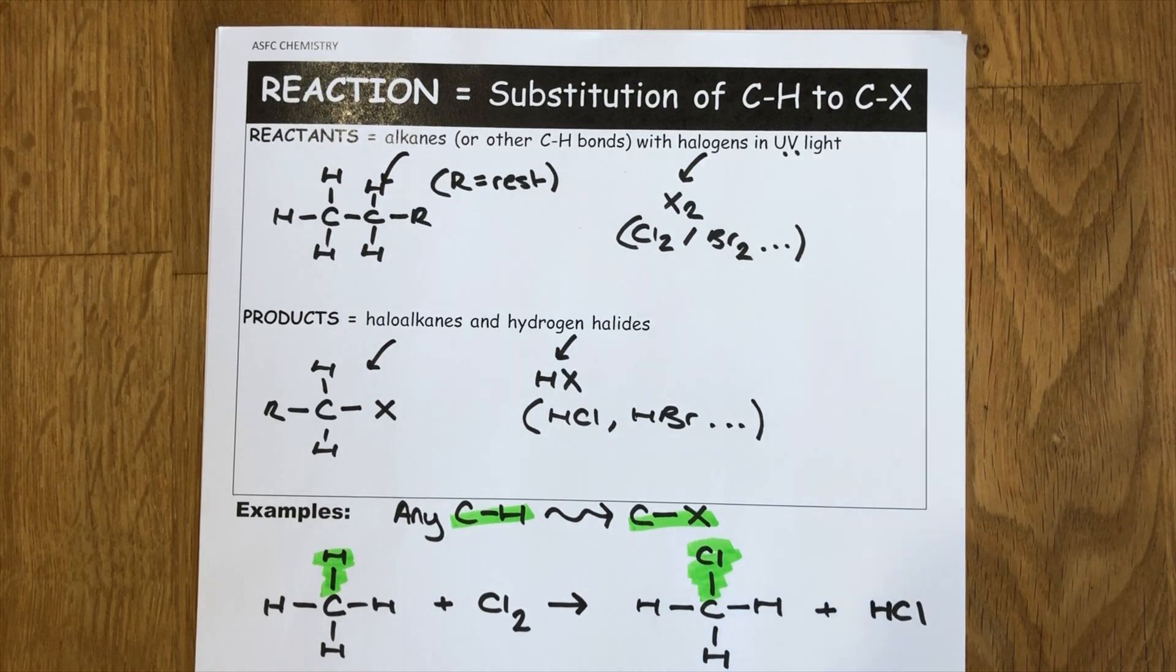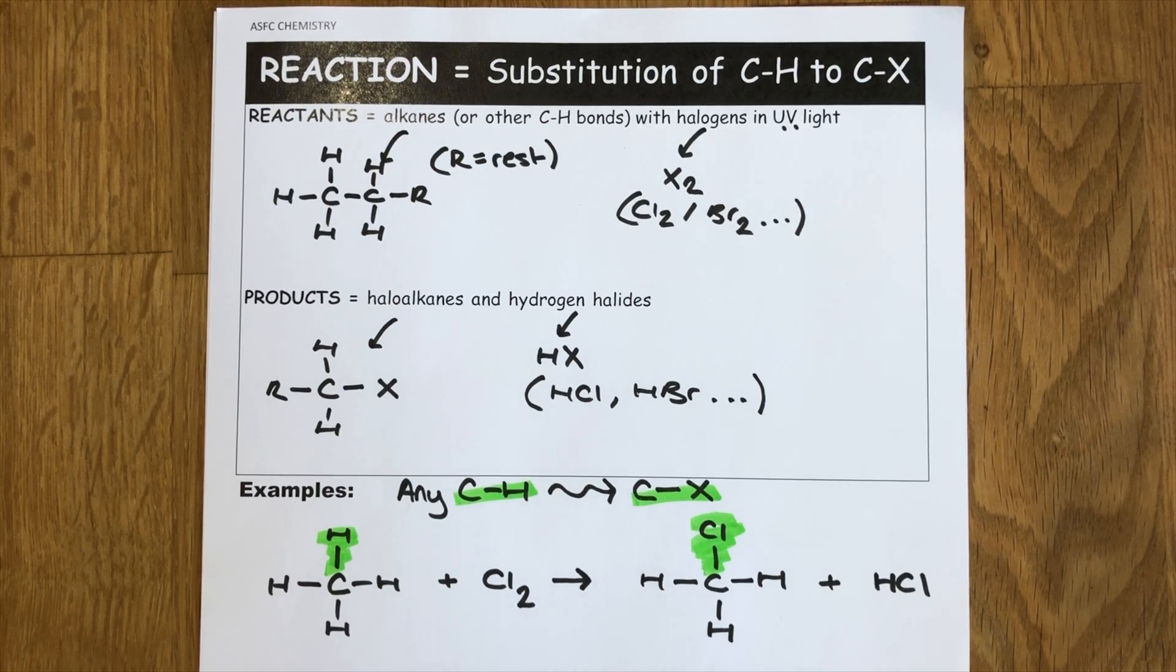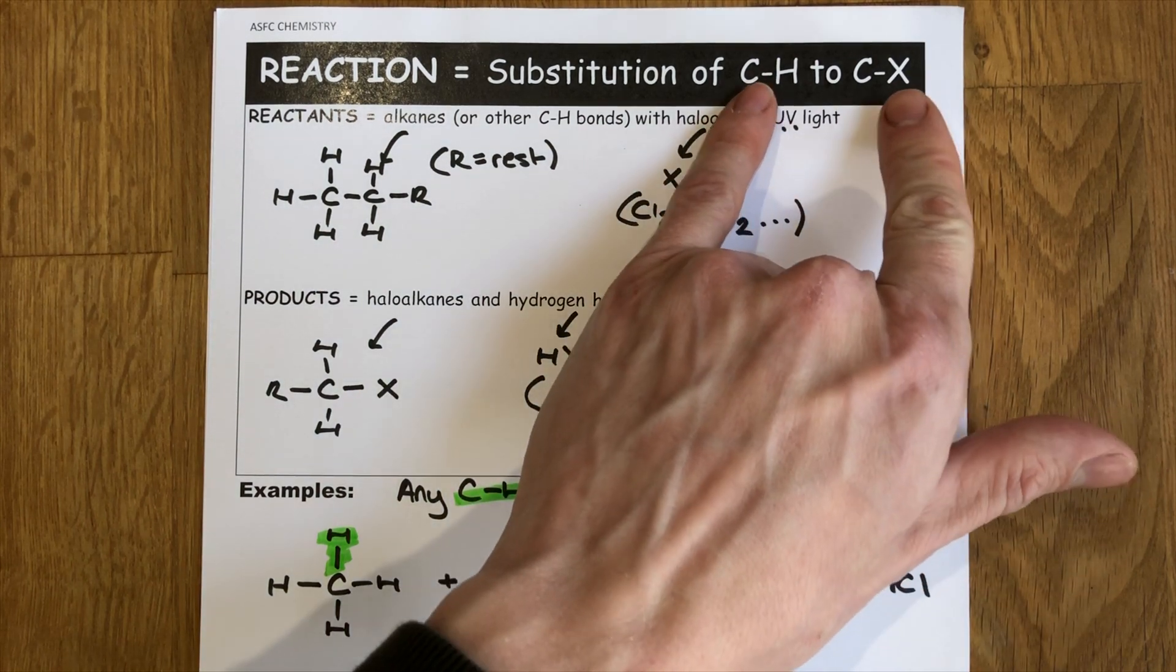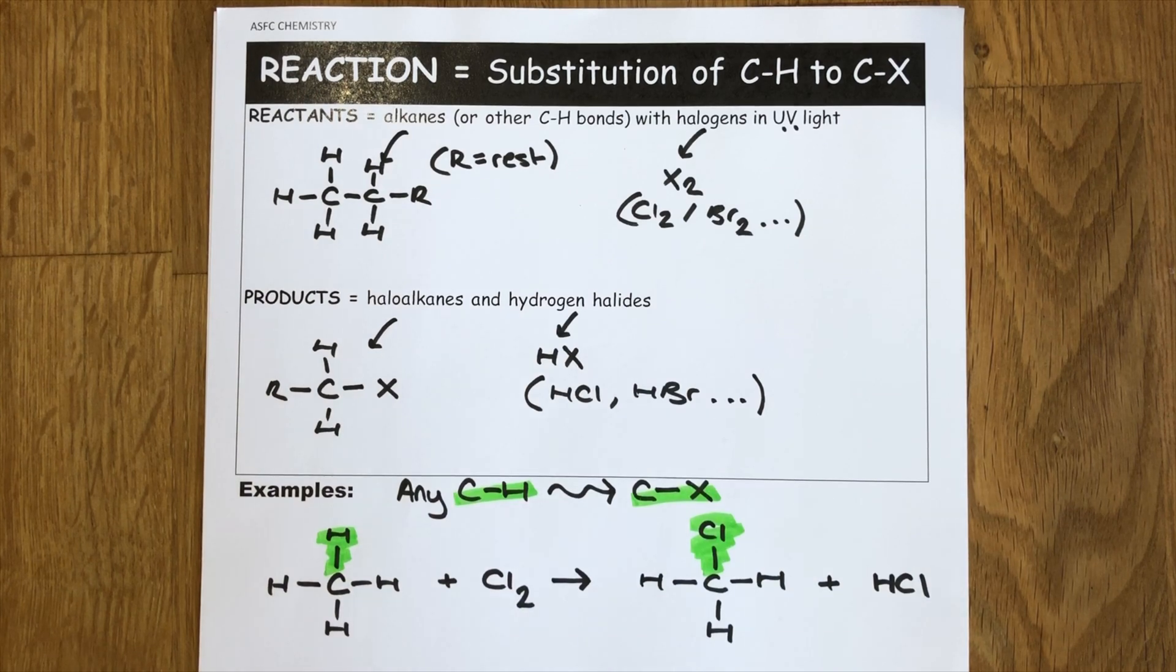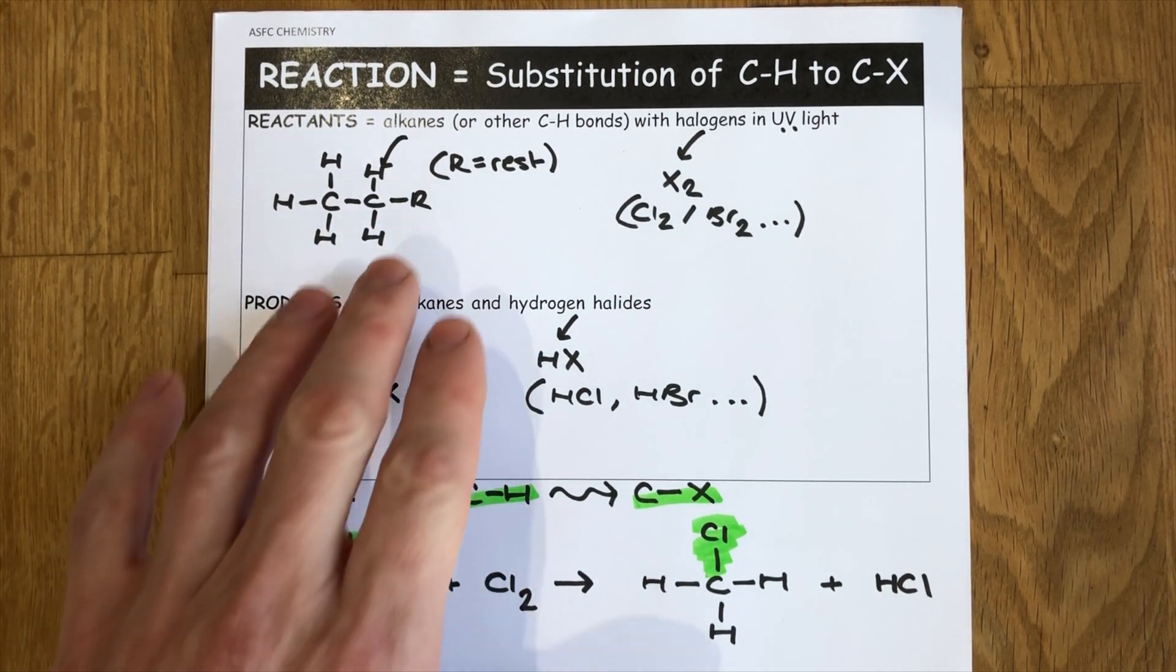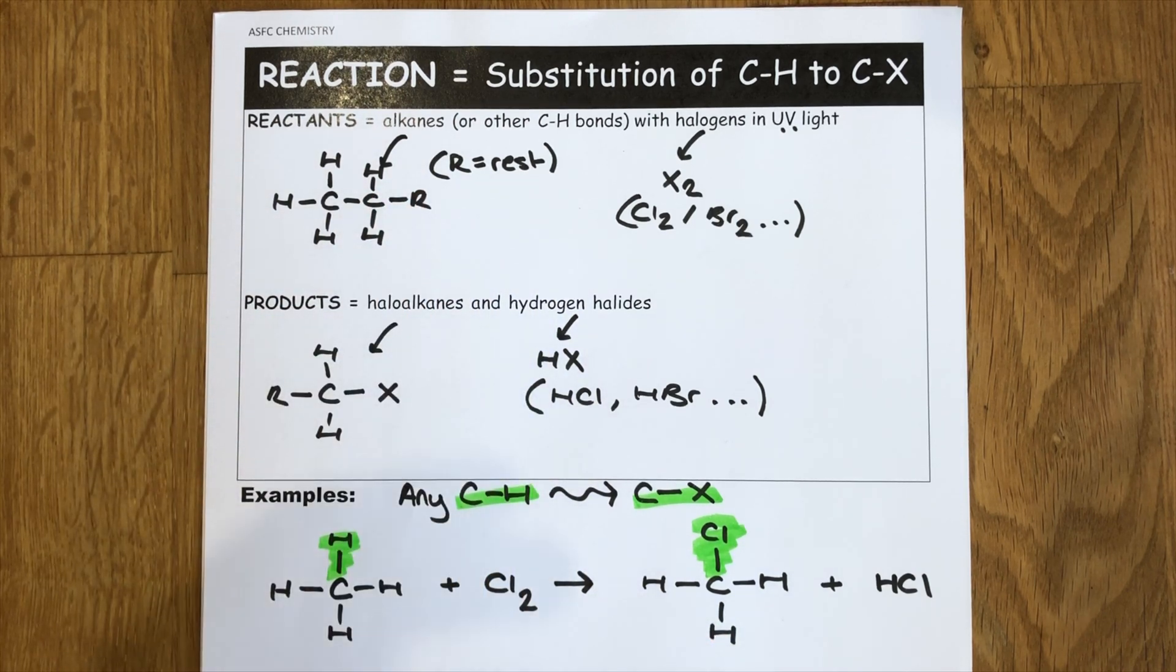The next thing we need to consider about alkanes is how the functional group reacts to form a different one. This is the first time we've really considered this and it's really the big focus of organic chemistry. For organic chemistry we don't react the entire molecule every time. We just look at specific functional groups and see how they change. Only changing one small section of a molecule at a time is an essential feature of organic chemistry.